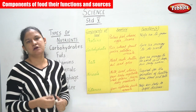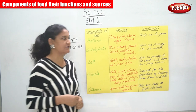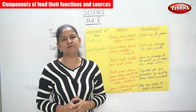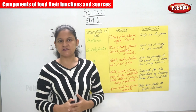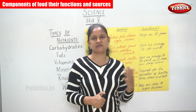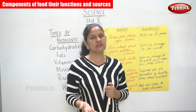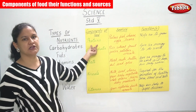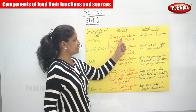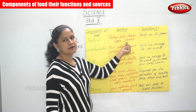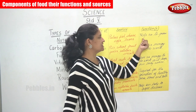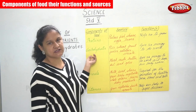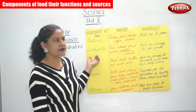Seafood is always very healthy, so the more seafood we consume the healthier we live. Protein is very important because it helps us to grow. As we grow in age, we need to grow in size and height accordingly. So the first important component is protein — found in pulses, fish, cheese, eggs, beans, and green leafy vegetables — and its function is it helps us to grow.